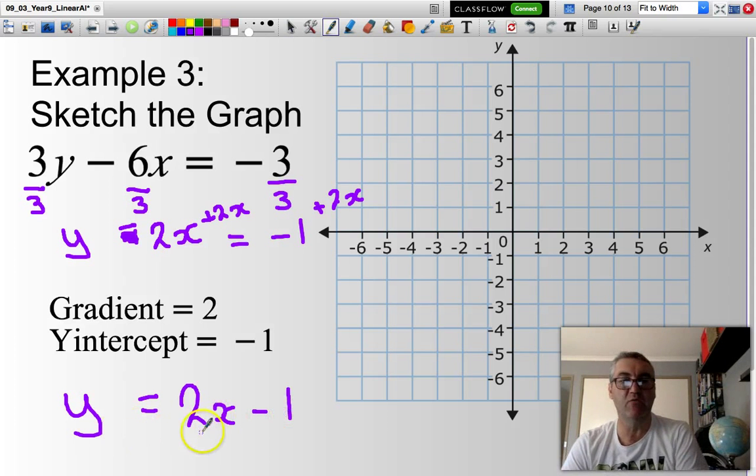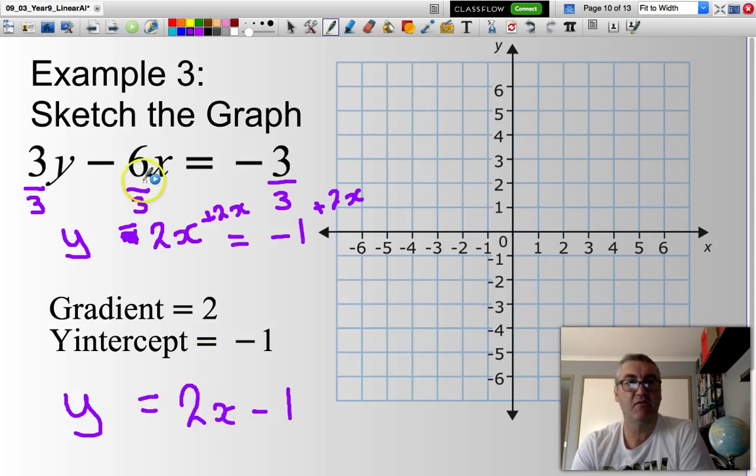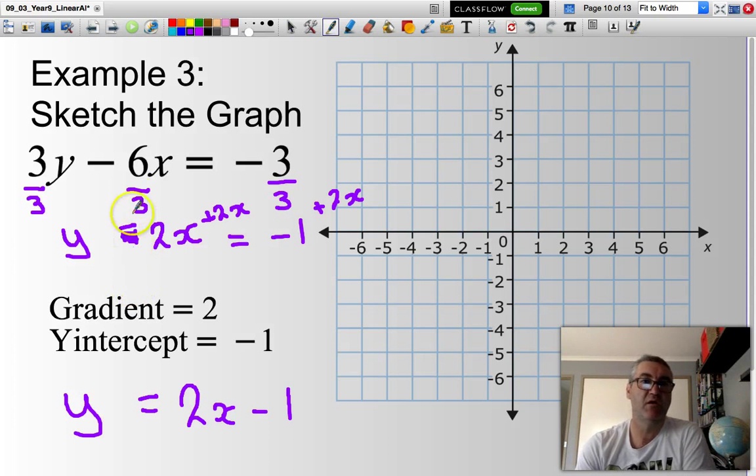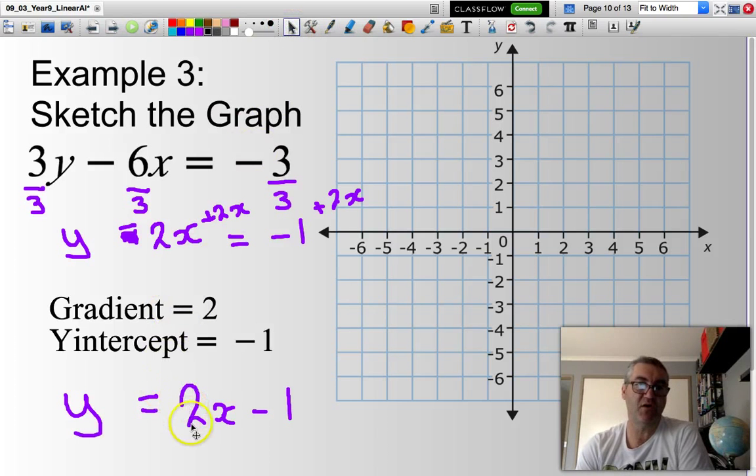And I'd end up with the equation y equals 2x minus 1. That then is in the form y equals mx plus b. If you can't see how I've done that, don't worry too much. You'll just have to build up a few more skills in algebra. Once I have this equation here, I can identify the gradient. That's 2, or 2 over 1, and the y-intercept of negative 1.